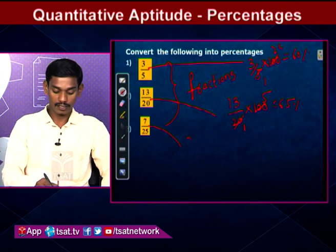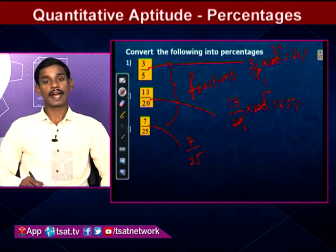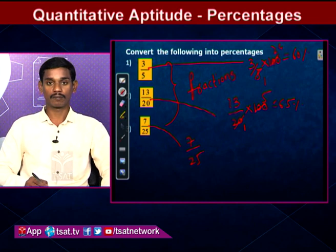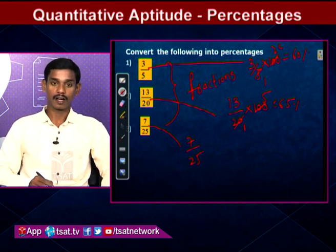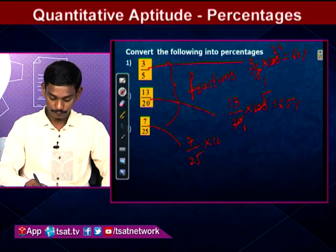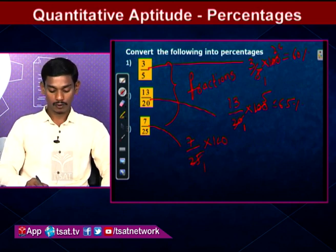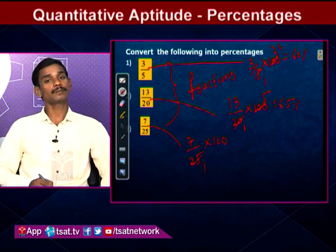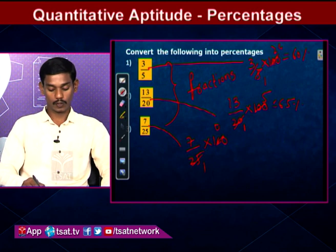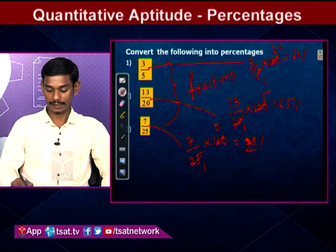Third: 7/25 as a percentage. Multiply by 100: 7/25 × 100 = 7 × 4 = 28%. So the fraction 7/25 equals 28 percent.